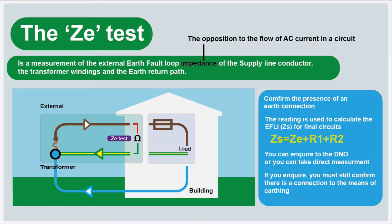The ZE test is an important test. It's a measurement of the external earth fault loop impedance of the supply line conductor, the transformer windings, and the earth return path. ZE stands for Z (impedance) E (external) — external to the building. So we have our house with our fuse board and our electrical installation, and we're testing the incoming supply line and the earth return path.